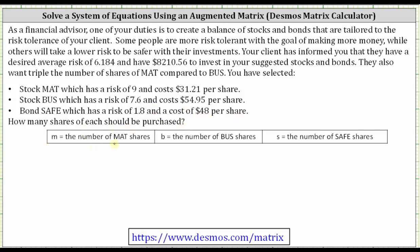We will let M equal the number of MAT shares, B equal the number of BUS shares, and S equal the number of SAFE shares. We'll have to write three equations: one involving the average risk, another involving the total cost, and a third involving the number of shares of MAT compared to BUS.